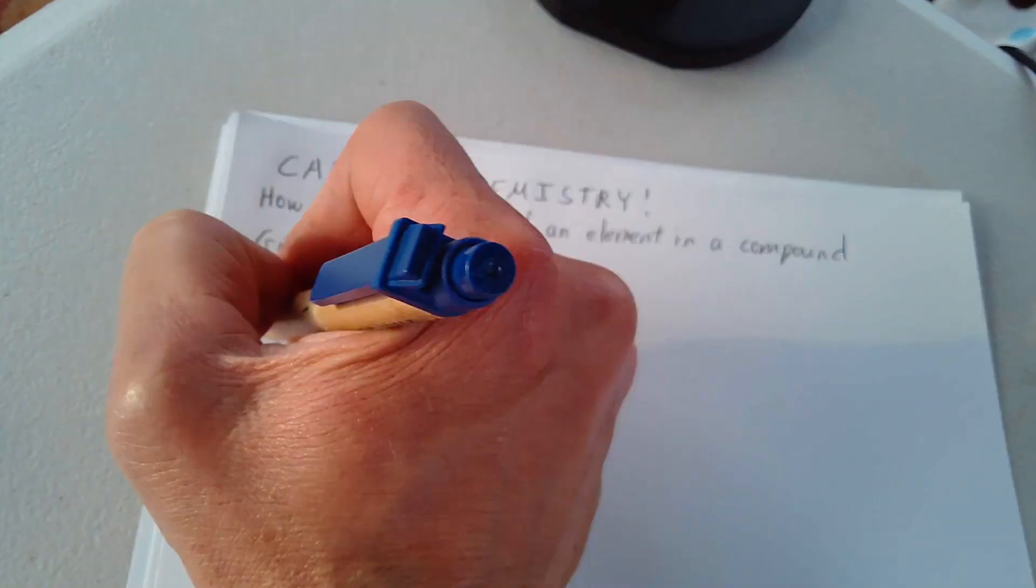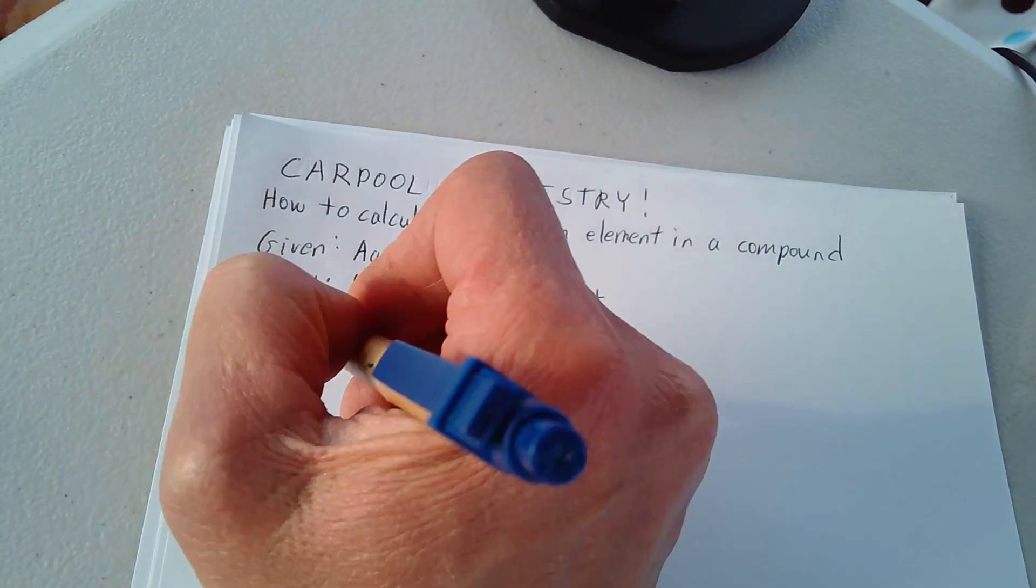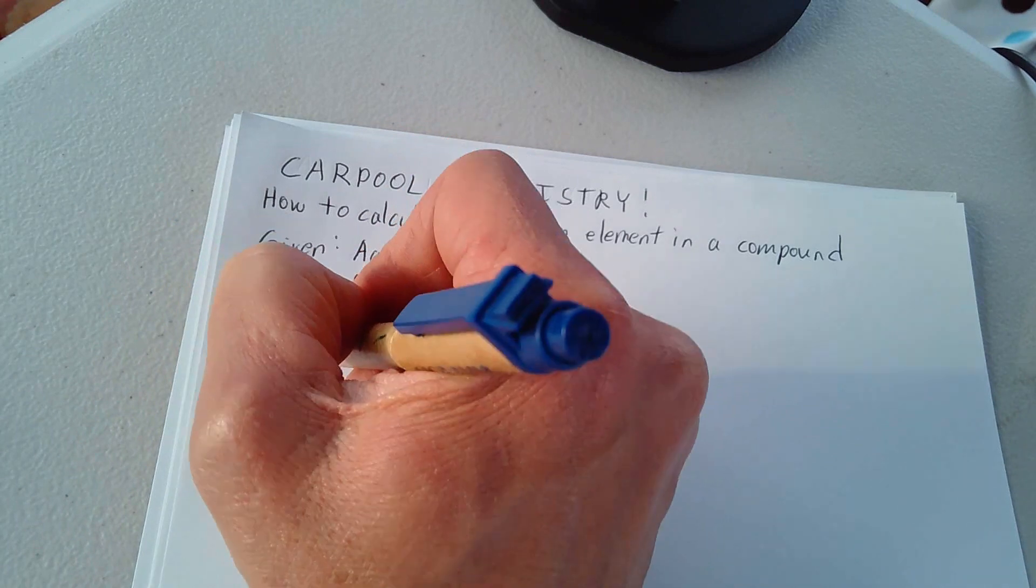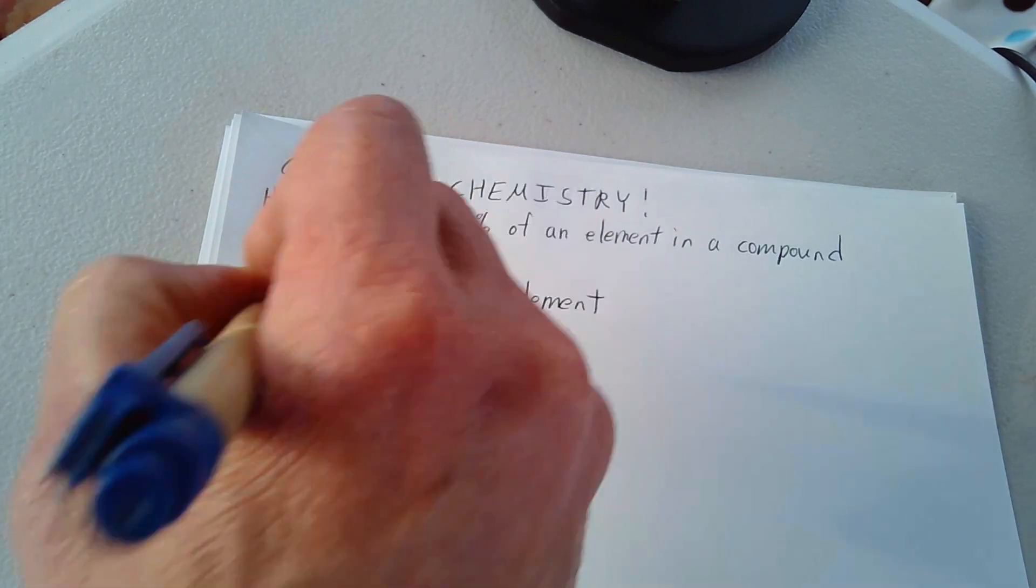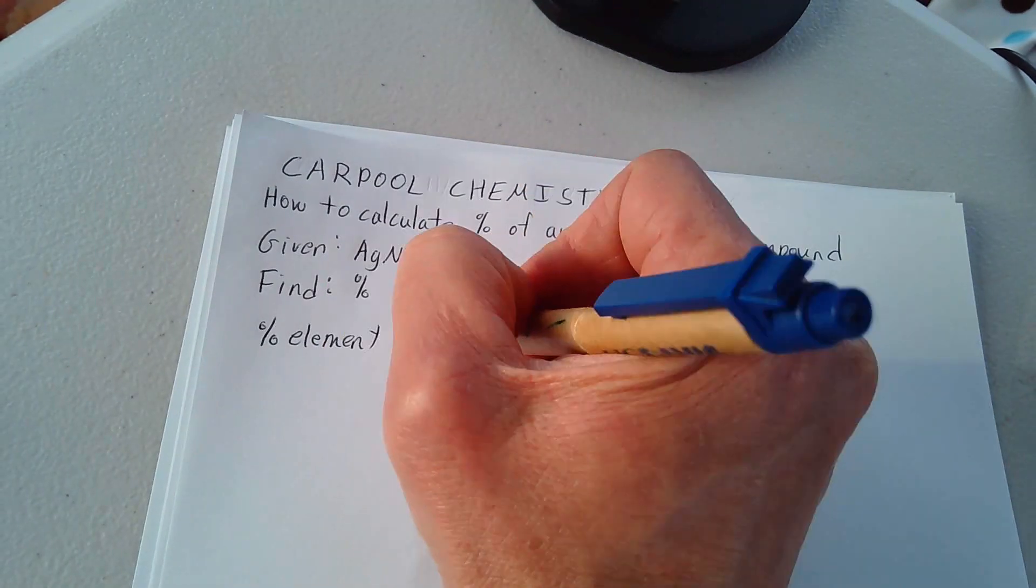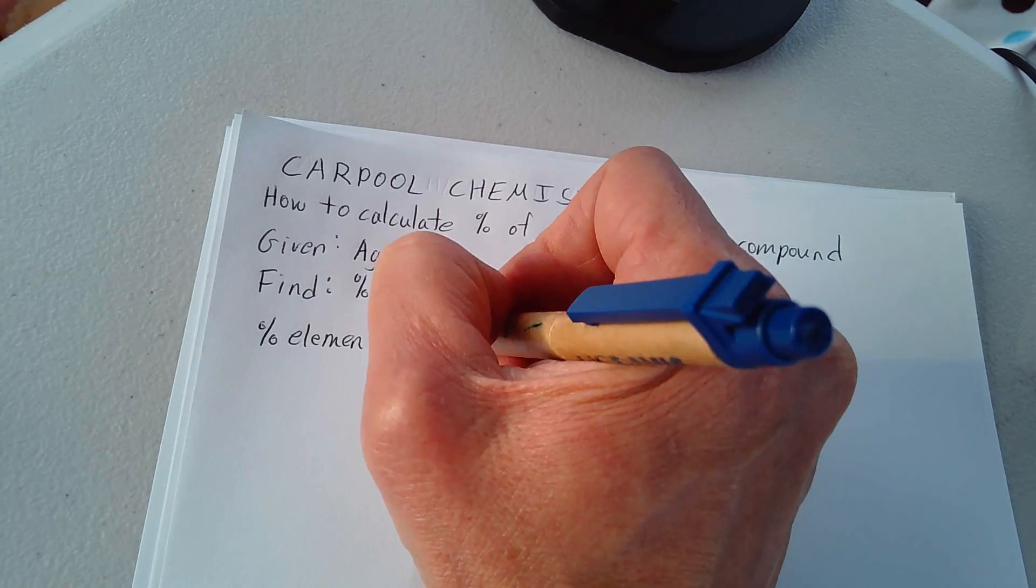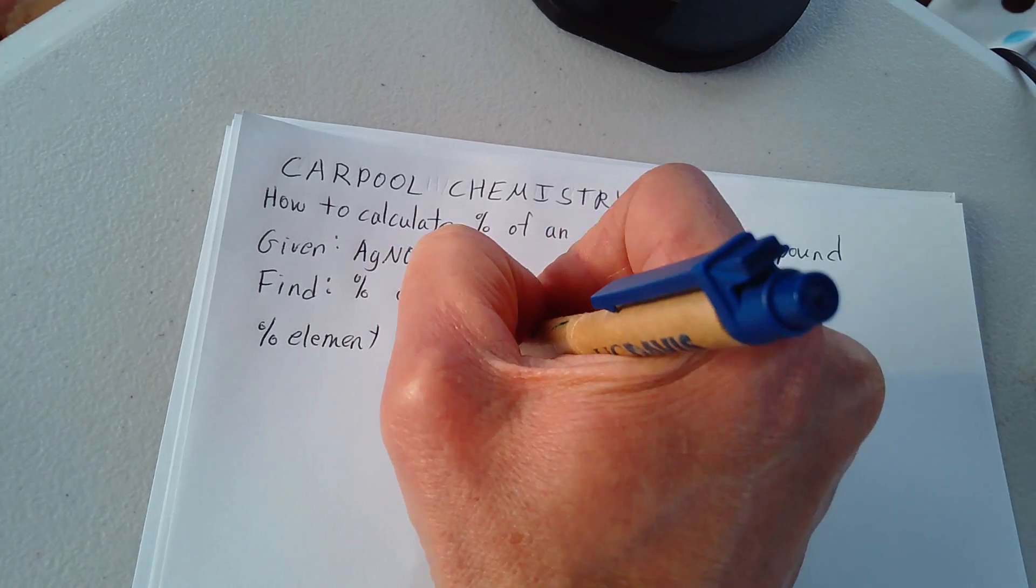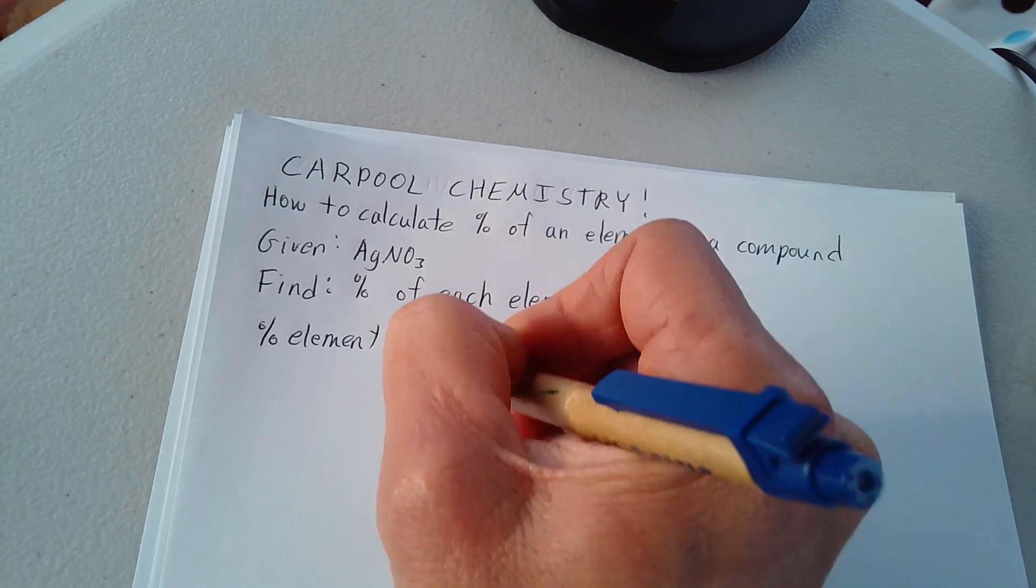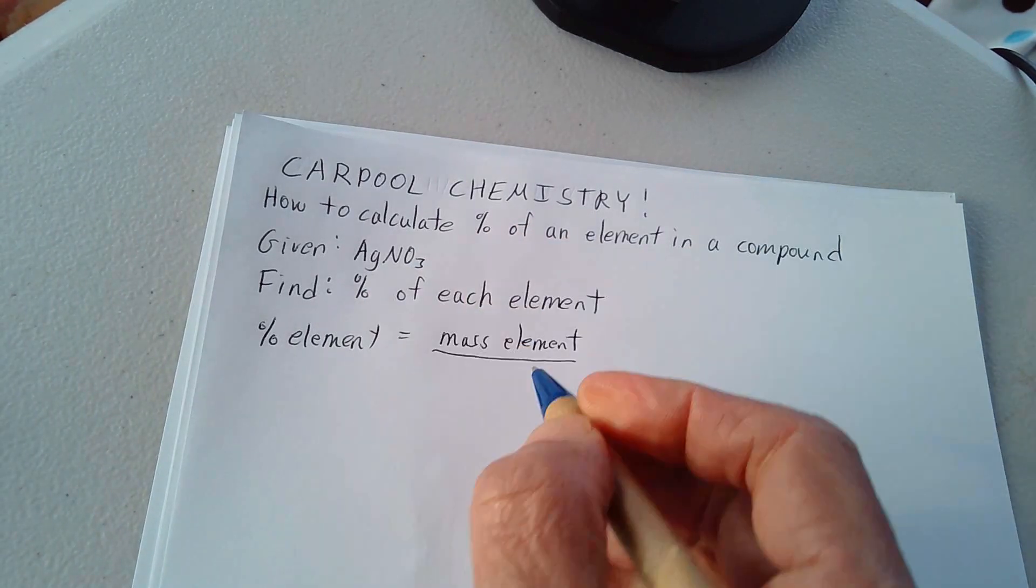We want to use the formula, and as with any percentage formula, all it is, is the small part divided by the large whole. That is, the percent of that element is the mass of the element divided by the total mass of the compound.